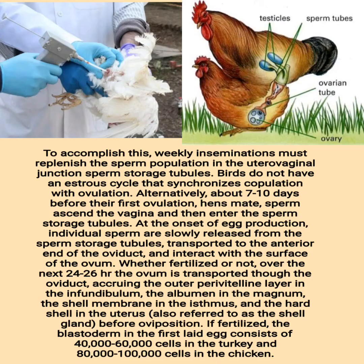To accomplish this, weekly inseminations must replenish the sperm population in the uterovaginal junction sperm storage tubules. Birds do not have an estrus cycle that synchronizes copulation with ovulation.